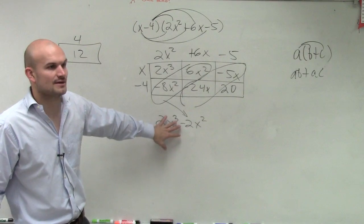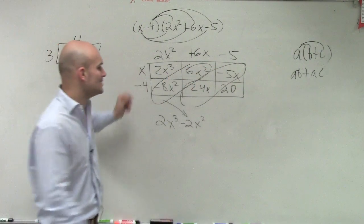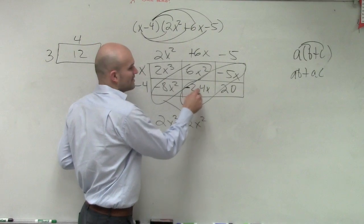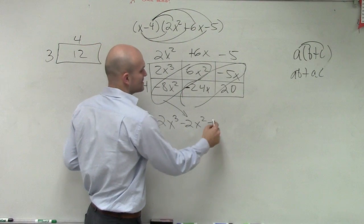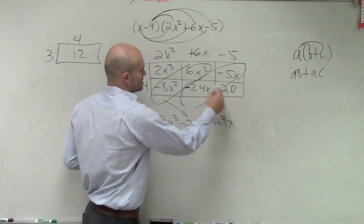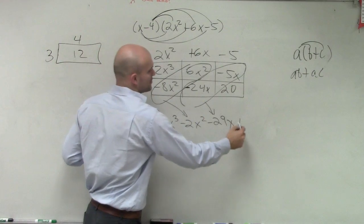The ones that are together that you can combine, you combine them. This is negative 24x minus 5x is negative 29x. So this one combined is right there and then plus 20.